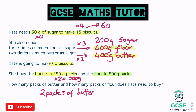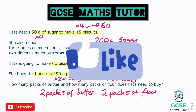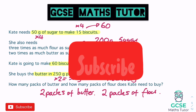Flour is sold in 500 gram packs and we need 600 grams. One pack isn't enough, so we need two: 2 × 500 = 1000 grams — well over 600g but that's fine. Final answer: two packs of butter and two packs of flour. That's the end of recipes — hopefully useful. Please like, comment, and subscribe!